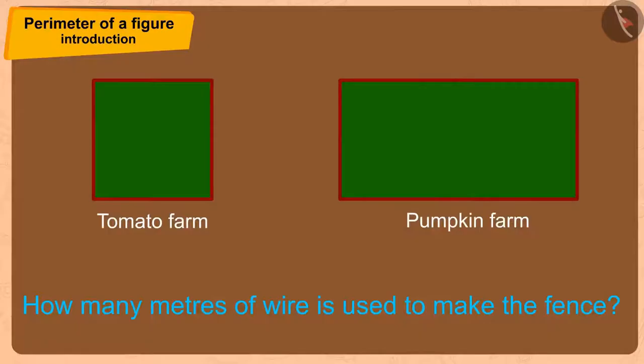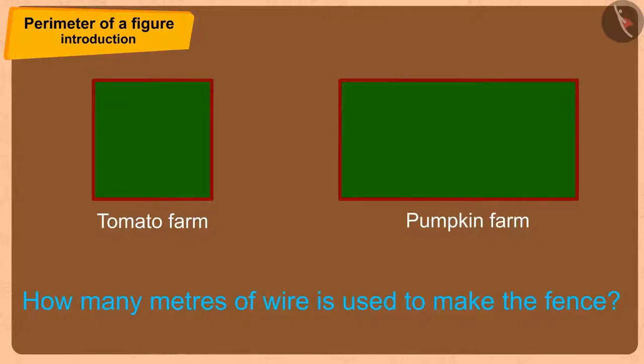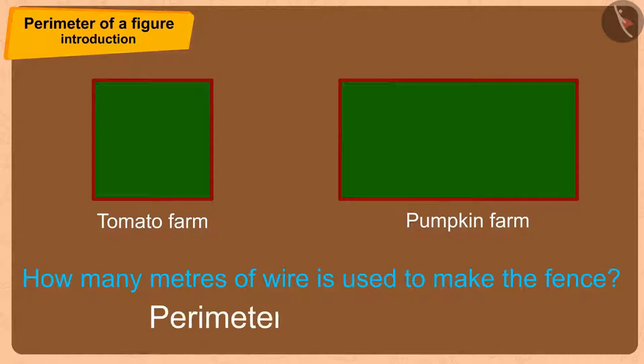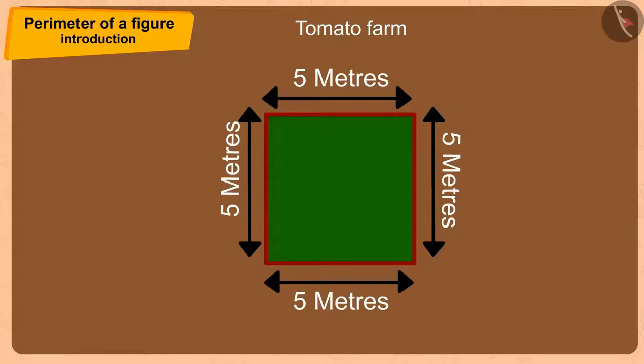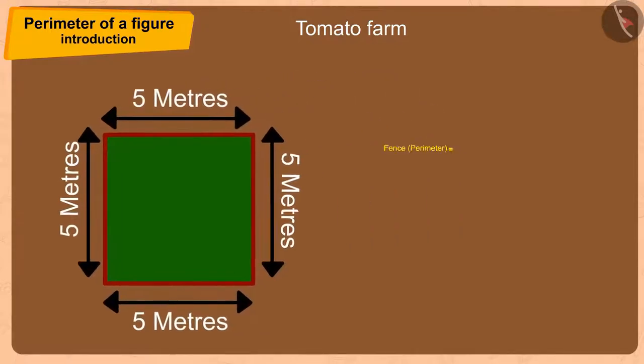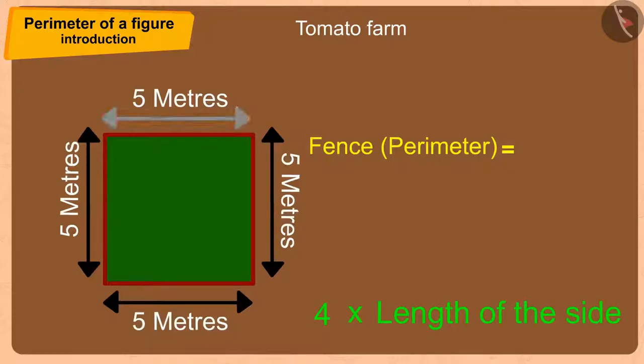To estimate the length of the wire used in a fence, we need to find the perimeter of that place. Tomatoes are cultivated in a square-sized area, with each side being 5 meters in length. And because all the sides of the square are of equal length, the size of a square-shaped fence will be 4 times the length of the side.